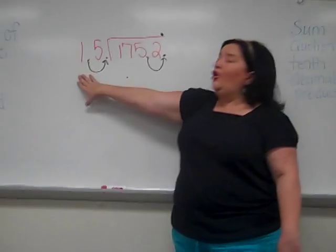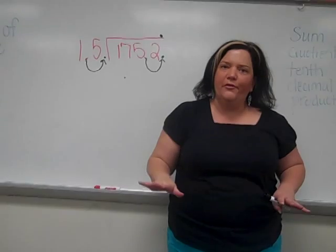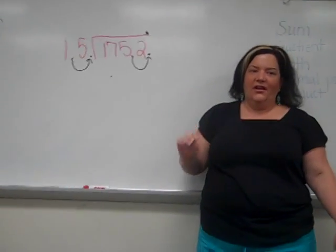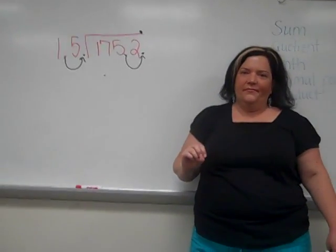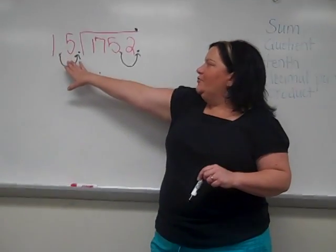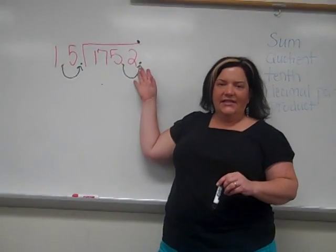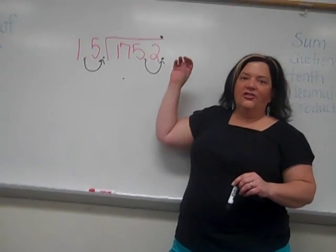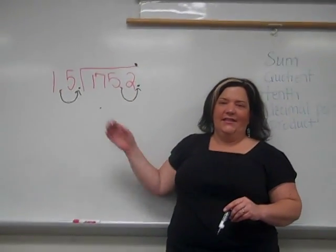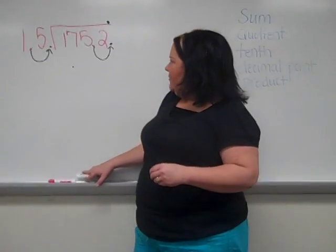Now, if there was no decimal point over here in the divisor, you don't have to worry about moving the decimal point in the dividend. You would just place it in the quotient directly above it. Let me state that one more time, children. If there are no decimal points in the divisor and there is a decimal point in the dividend, just simply rewrite the decimal point up in the quotient where you would find it in the dividend. Okay, now it's time to solve.